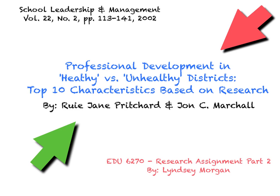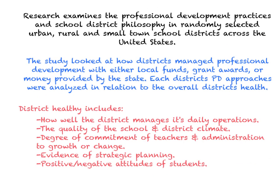For the second half of this research assignment, I found the article 'Professional Development in Healthy and Unhealthy Districts: The Top 10 Characteristics Based on Research' by Rui Jane Pritchard and John C. Marshall. It caught my eye after looking into the characteristics of successful school systems found in the Ontario Leadership Framework. The research examines professional development practices and school district philosophy in randomly selected urban, rural, and small-town school districts across the United States.